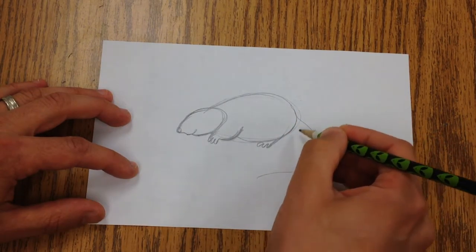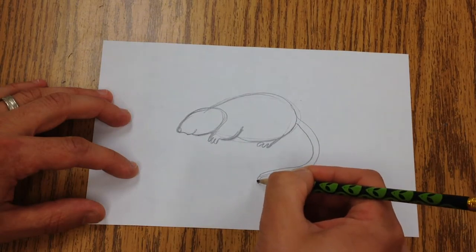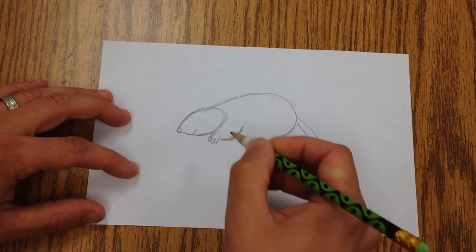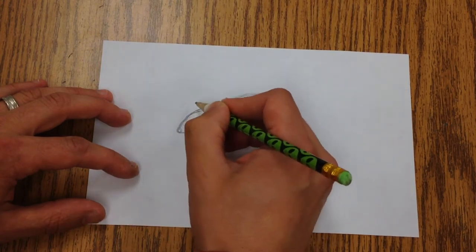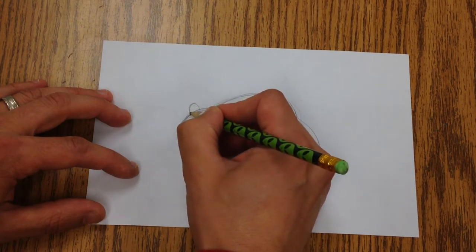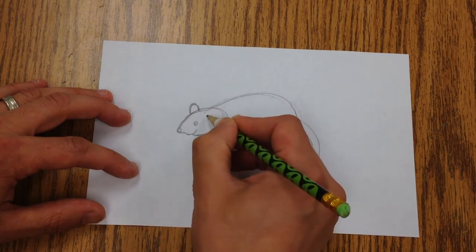And the tail will come out like this and double it and it's going to get thinner at the end. We're going to add a little eye here and a rainbow shape here for the ear.